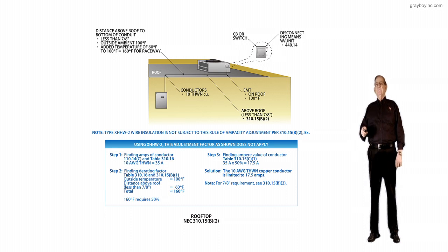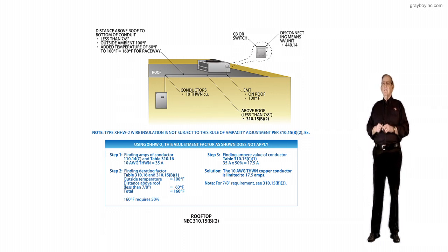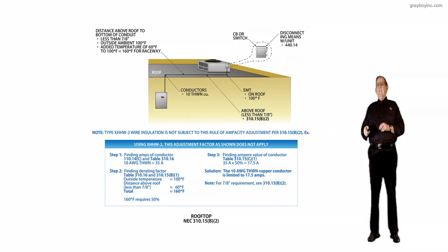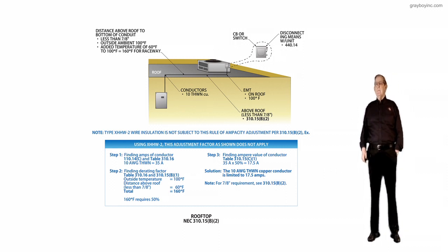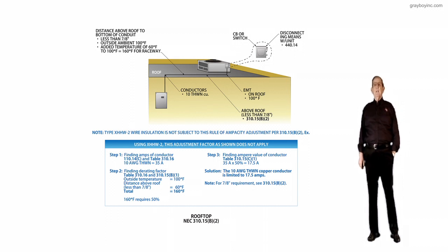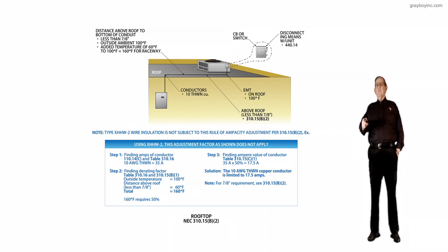Let's go to step 3. Using the table, we find that 50% of 35 is 17.5. The 10 AWG THWN copper conductor is limited to 17.5. So the 7 eighths requirements in accordance with 310.15B2, the new ampacity for that number 10 conductor is 17.5. That means it could only be put on a 20 amp circuit, and the current would be limited to 17.5 for your load. So can you afford that? You'd say no, I sure can't. So then just use your XHHW slash 2, and none of this applies.